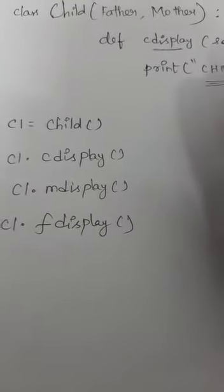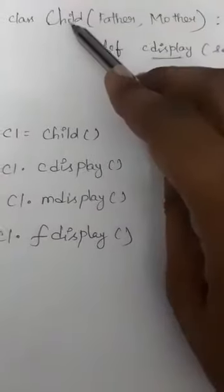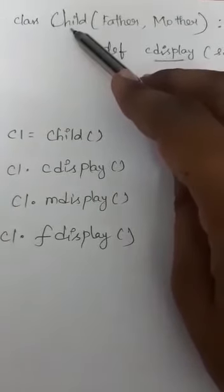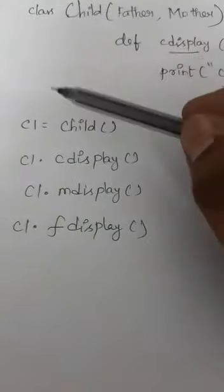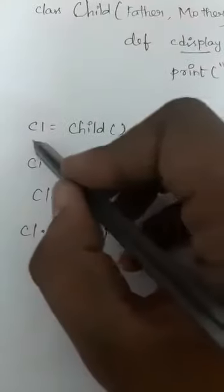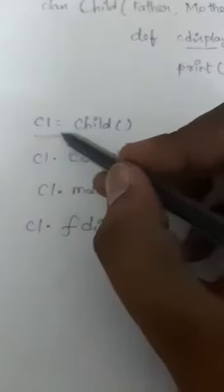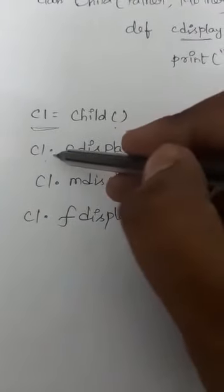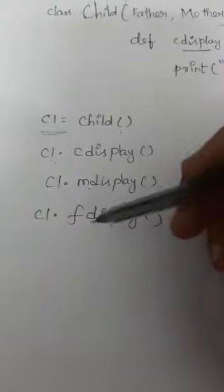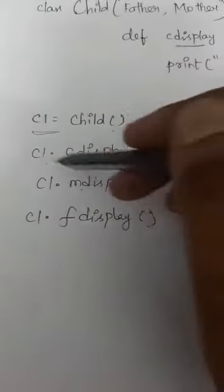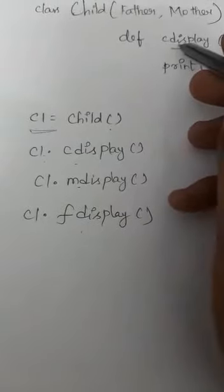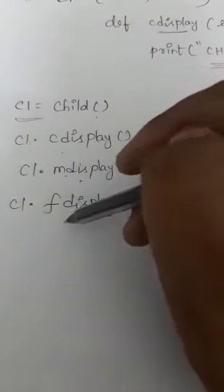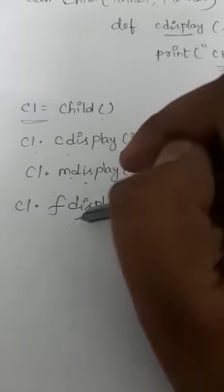I need to create an object only for the child class, because when I create an object for the child class, this child class inherits the properties of both the father class and the mother class. So it is enough to create an object for child class: c1 = child(). With c1.c_display() you access the method in the child class, c1.m_display() accesses the method in the mother class, and c1.f_display() accesses the method in the father class.